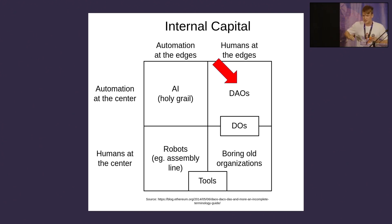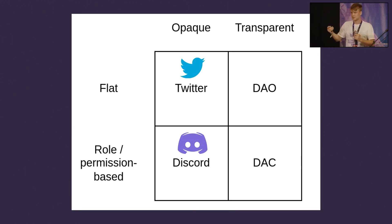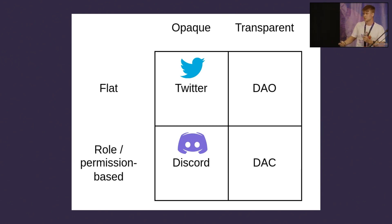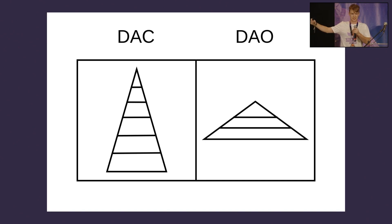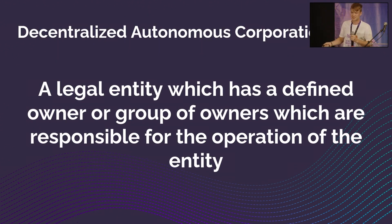A DAO is a subset of a DAC. Diving deeper on what a DAO can truly be — it's kind of like Twitter. Everyone has equal say, everyone can do whatever they need to communicate, and everyone's voice is treated equally. Of course, you have more followers and more retweets so your voice has more impact. A DAC structure, on the other hand, is more like Discord — role and permission based, open and transparent. You can set specific roles and permissions to give more access to different types of content. Another version: a DAO is like a flat organization, while a DAC is more of a tall organization. A decentralized autonomous corporation is a legal entity which has a defined owner or group of owners responsible for the operation of the entity.